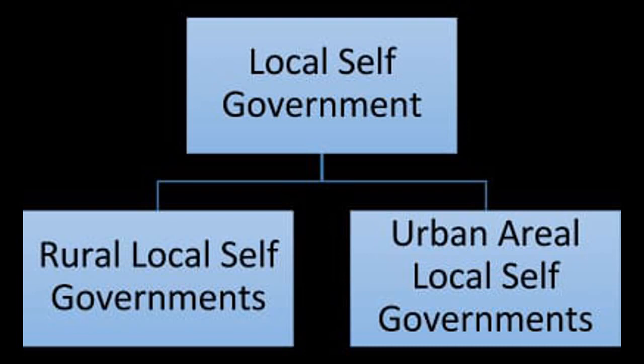Lord Ripon removed the obstacles in the sphere of local self-government through his resolution of 1882. He led a series of enactments through which larger powers of local self-government were given to rural and urban bodies, giving great importance to local self-government.